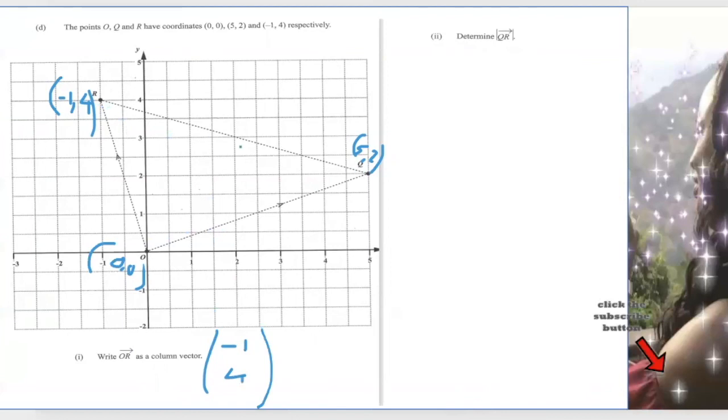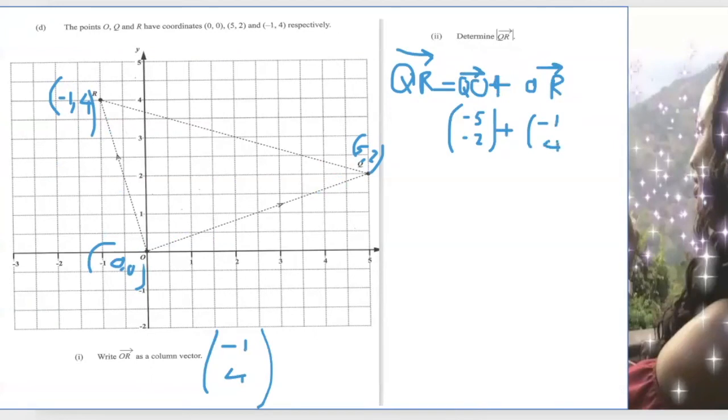The next question asks to determine the length of QR. So first I need to find out what is QR. To find QR using a triangle, I will find QO plus OR. Now QO, we have changed the direction because we have OQ to be 5, 2. So QO is minus 5, minus 2. OR remains the same, so that's minus 1 and 4.